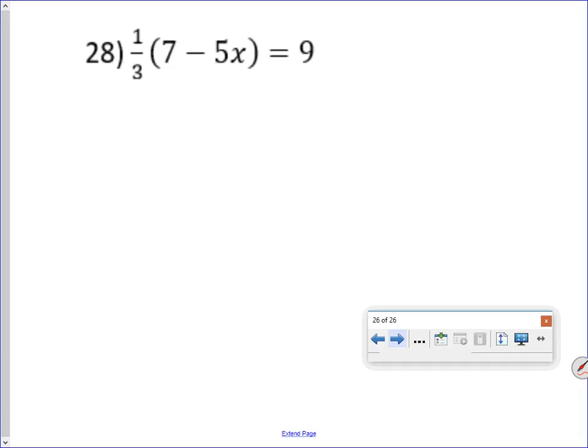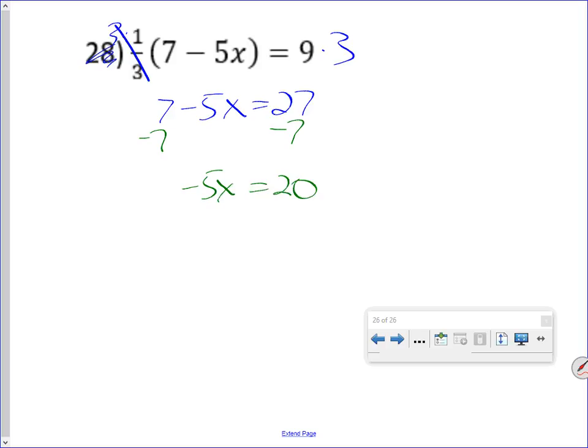And the last problem. Once again, if I got this fraction up front, I multiply both sides by 3. That cancels. Multiplicative inverse. And I'll get 7 minus 5x equals 27. Subtract 7 from both sides. I'll get negative 5x equals 20. Divide both sides by negative 5. And I'll get x equals negative 4.